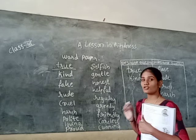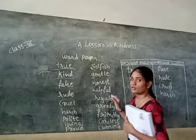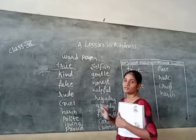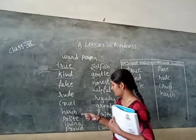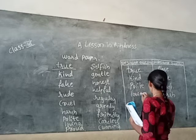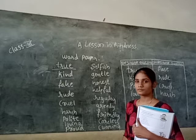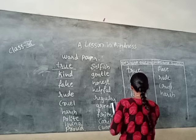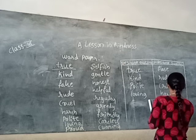Next, 'Polite' — how should we be? We should be polite towards others. So polite is desirable. 'Loving' — yes, we should love everyone. So loving is desirable. 'Proud' — proud is undesirable.